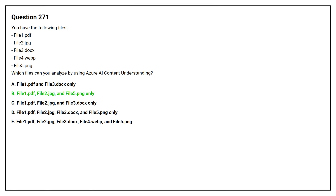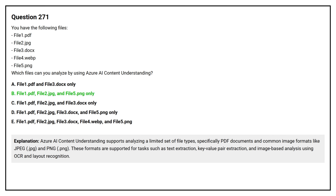The correct answer is Option B: file 1.pdf, file 2.jpg, and file 5.png only. Azure AI Content Understanding supports analyzing a limited set of file types — specifically PDF documents and common image formats like JPEG (.jpg) and PNG (.png). These formats are supported for tasks such as text extraction, key-value pair extraction, and image-based analysis using OCR and layout recognition.